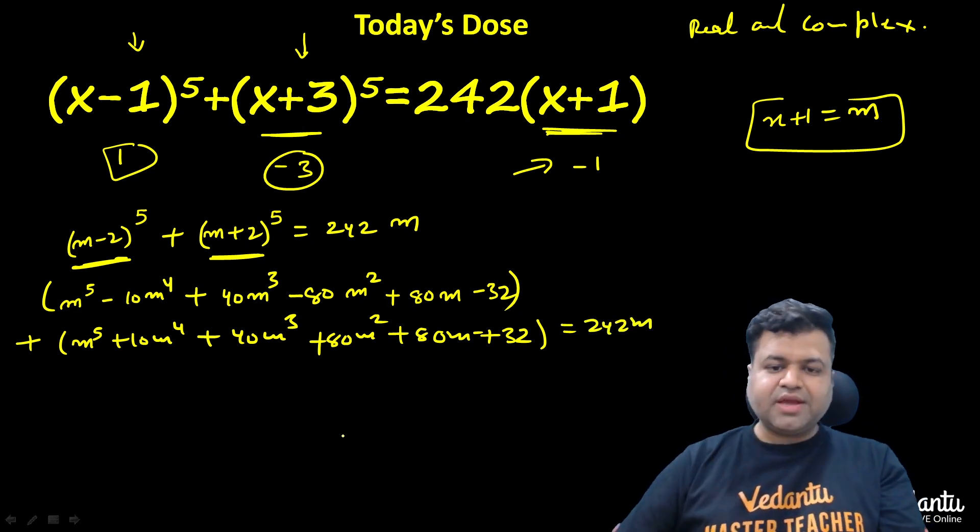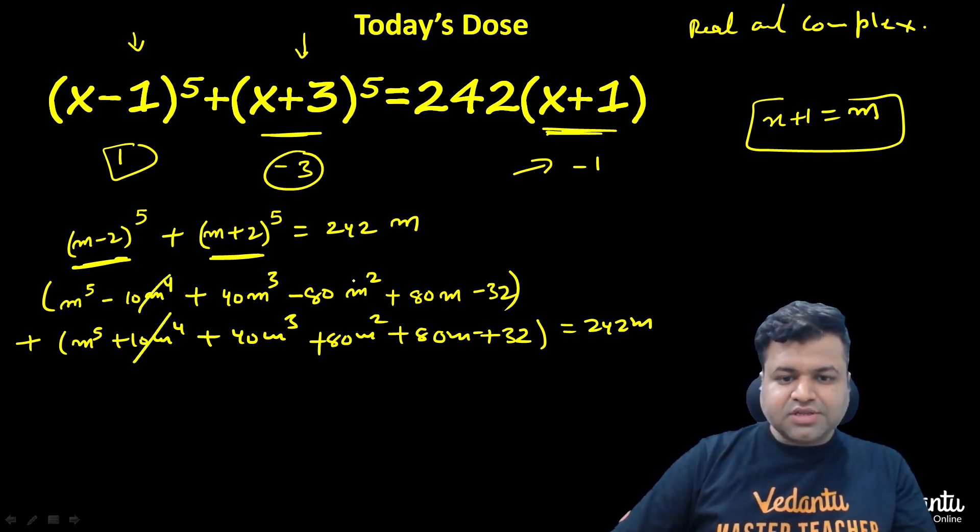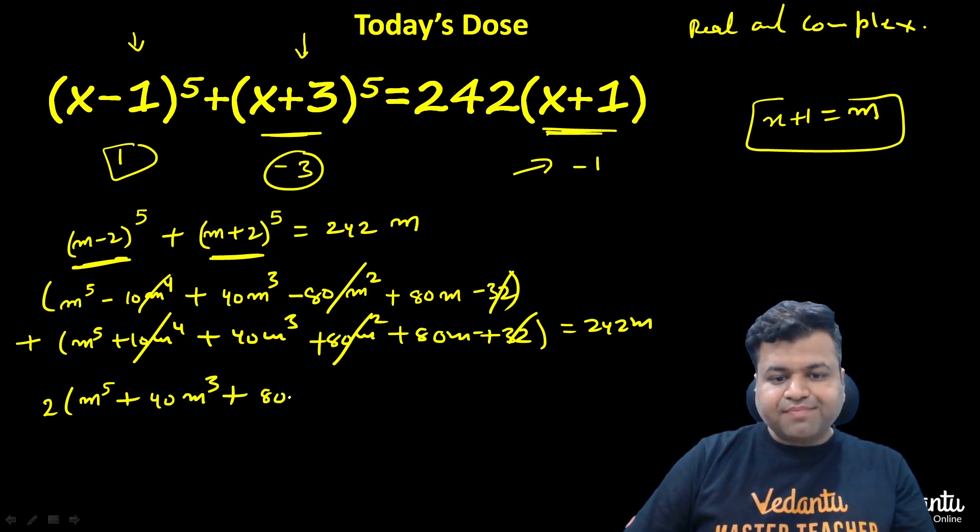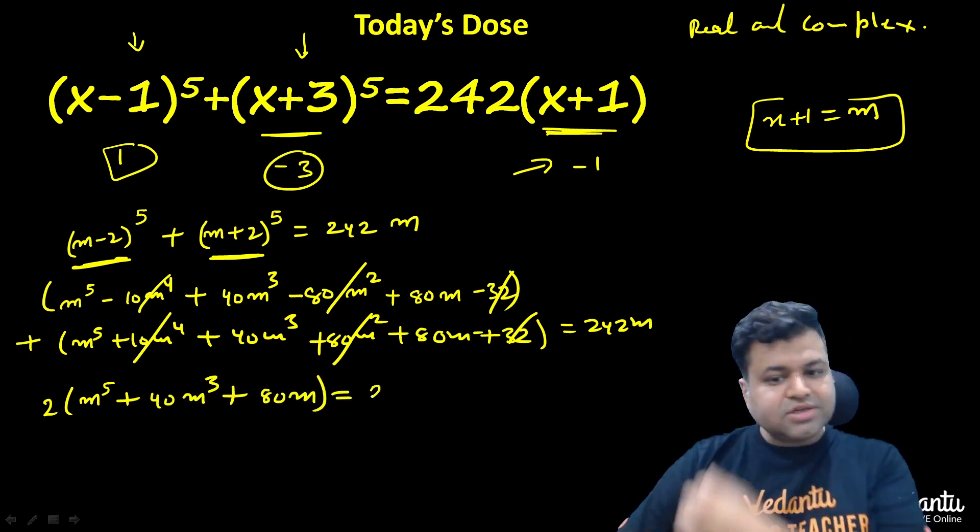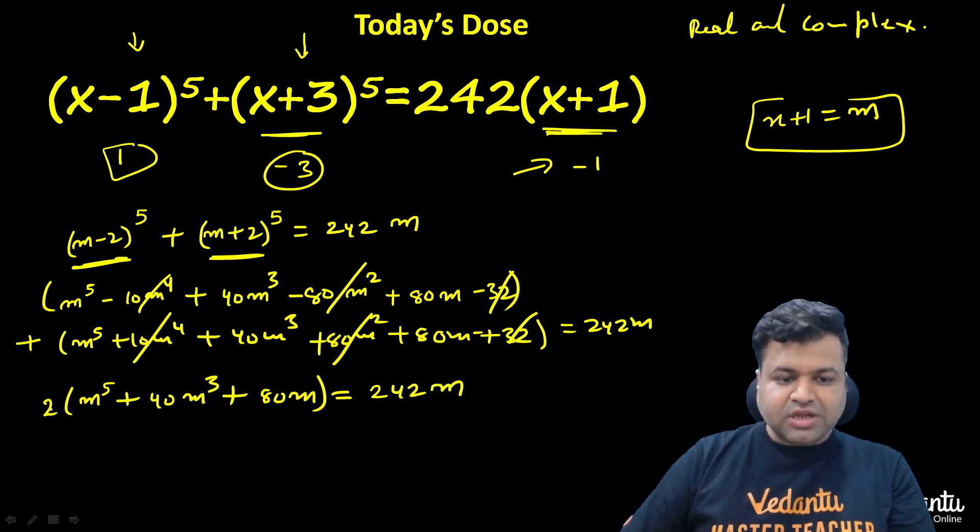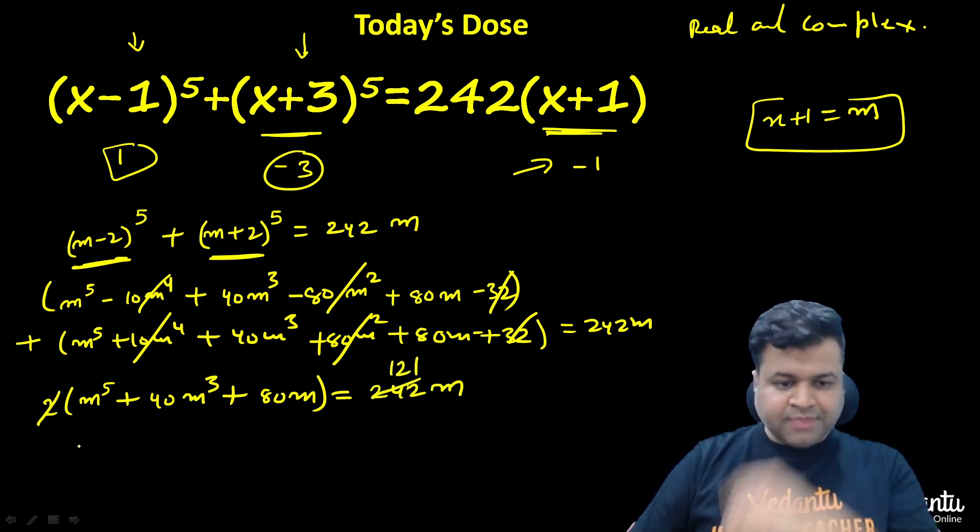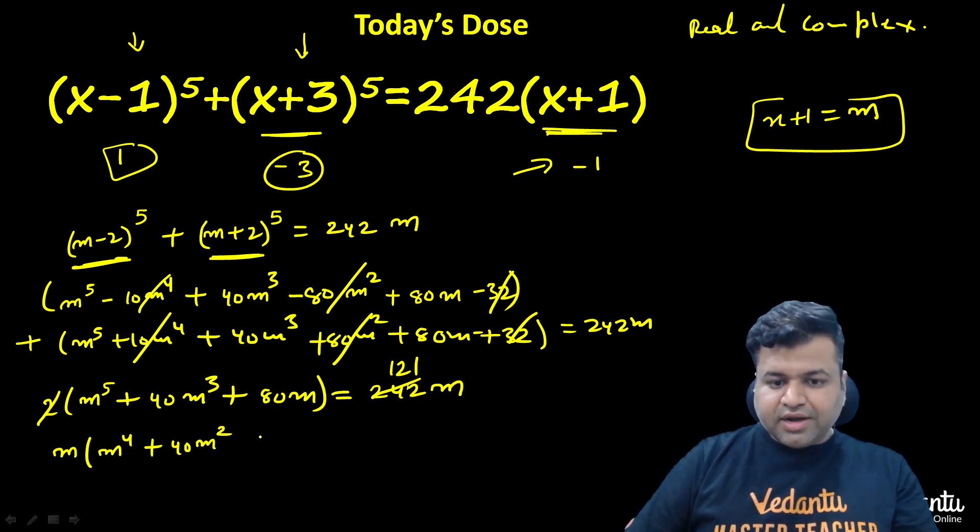When we add these, the m^5 terms cancel out, the m^4 terms cancel, and the m^2 terms cancel. We are left with twice of 40m^3 plus 80m, which equals 242m. Simplifying, we get 2(m^5 + 40m^3 + 80m) = 242m. We can cancel the 2, getting 121m on the right side. Factoring m on the left, we get m(m^4 + 40m^2 + 80 - 121) = 0, which is m(m^4 + 40m^2 - 41) = 0.